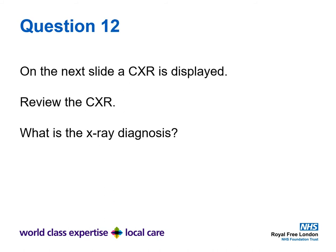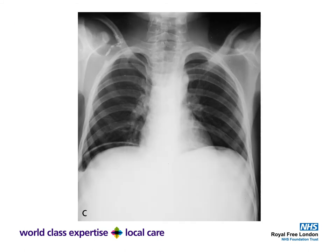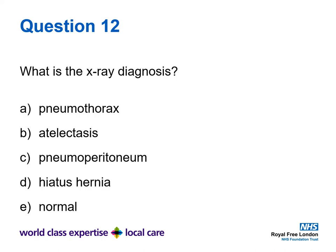On the next slide a chest x-ray is displayed. Review the chest x-ray and decide what is the x-ray diagnosis. Pause to spend as much time as needed to look at the image. What is the x-ray diagnosis? Is it A) pneumothorax, B) atelectasis, C) pneumoperitoneum, D) hiatus hernia, or E) normal?